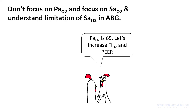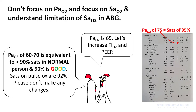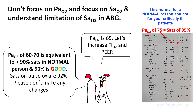Another problem with ABG is that people start focusing on PO2 and not on SaO2. For example, if your PO2 is around 60 to 65, many providers will want to change ventilator settings to improve this number. However, on a closer look, you realize that PO2 of 65 is actually SaO2 more than 90%, which is very reasonable for a critically ill patient. The problem comes from looking at the normal ABG range, which shows 75 to 105. Understand that PO2 of 75 corresponds to SaO2 of 95%, which is much higher than what you are aiming for. Your aim in a critically ill patient is SaO2 of 90% and above.